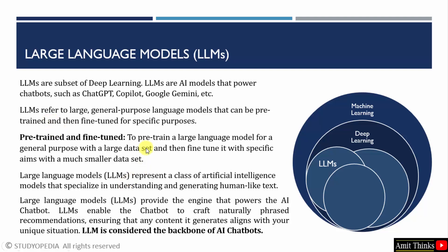LLMs are large language models — that means large general purpose language models — that can be pre-trained and then fine-tuned for specific purposes. You can pre-train an LLM with a large dataset, and fine-tuning means to fine-tune it with a particular aim using a smaller dataset from that large dataset.